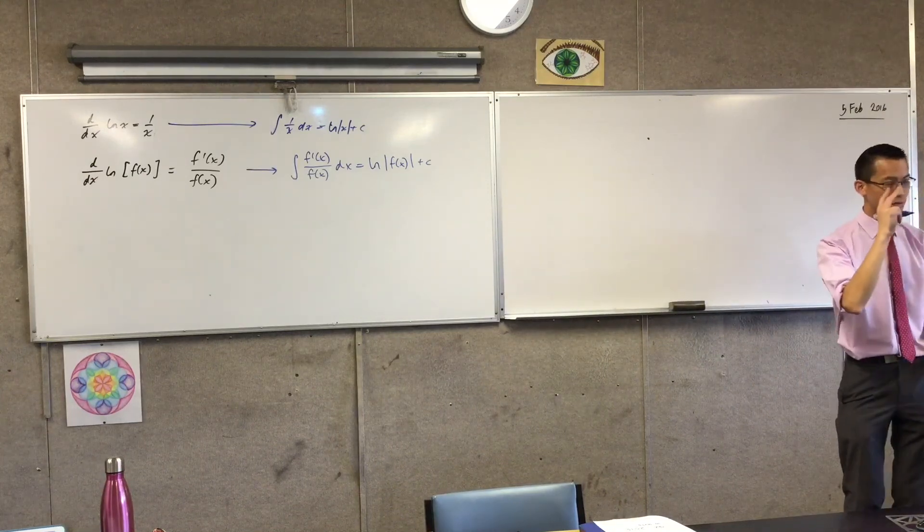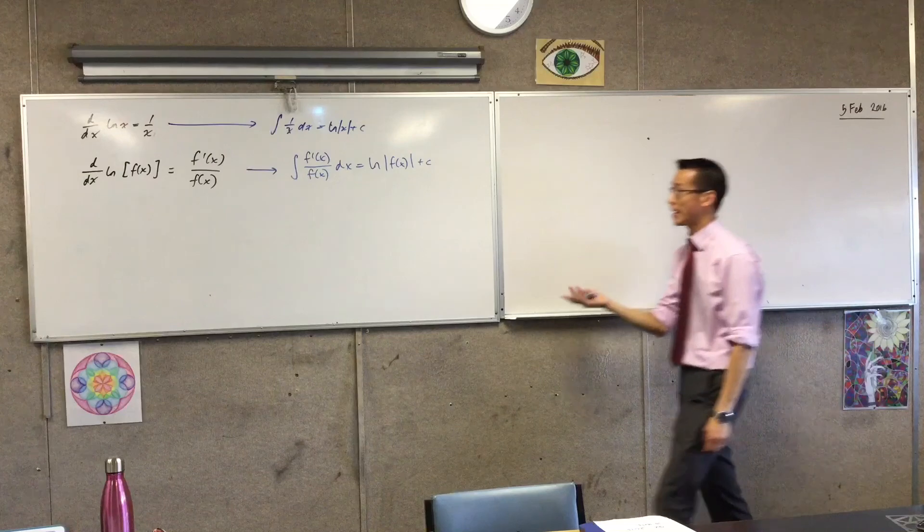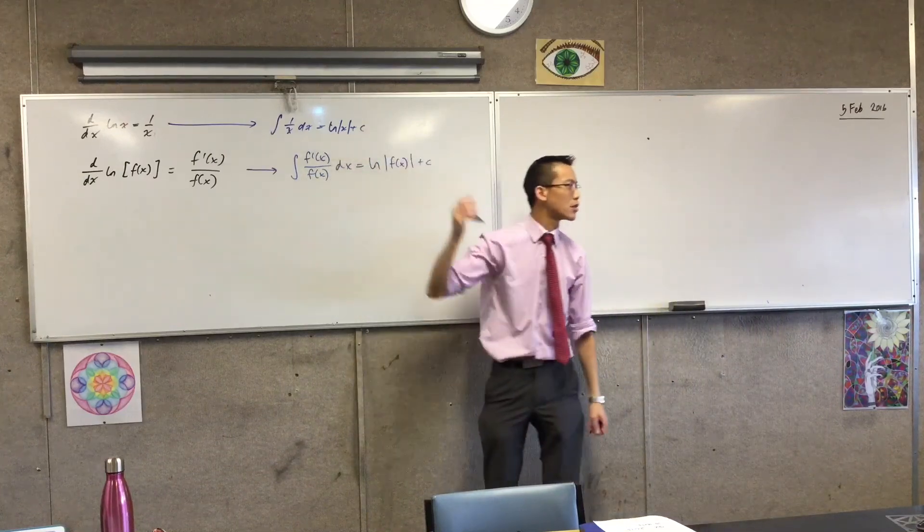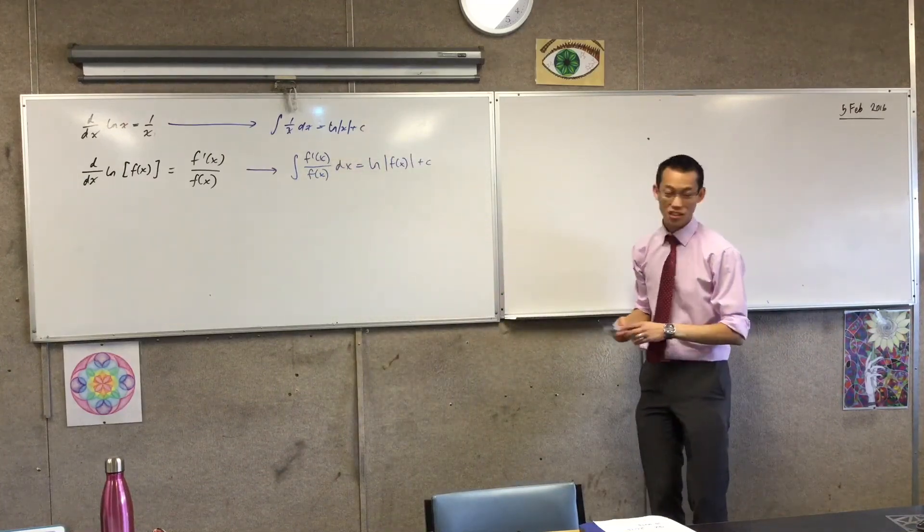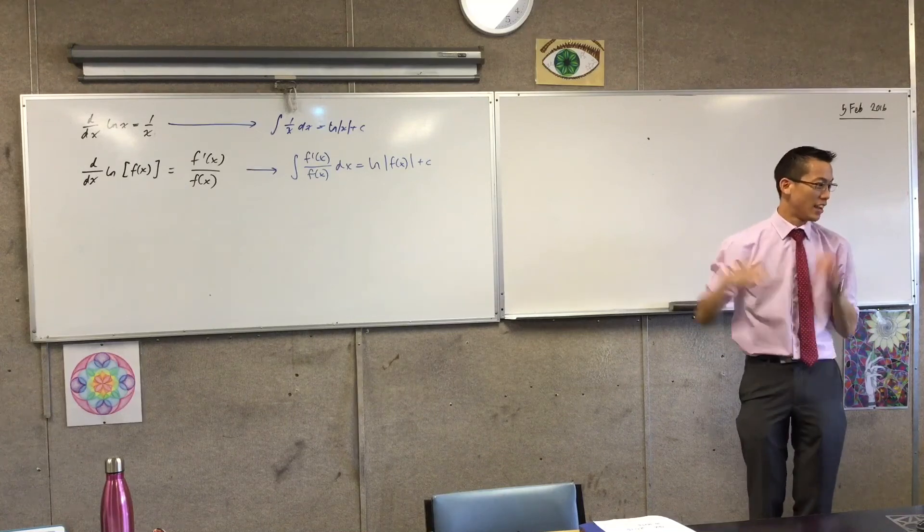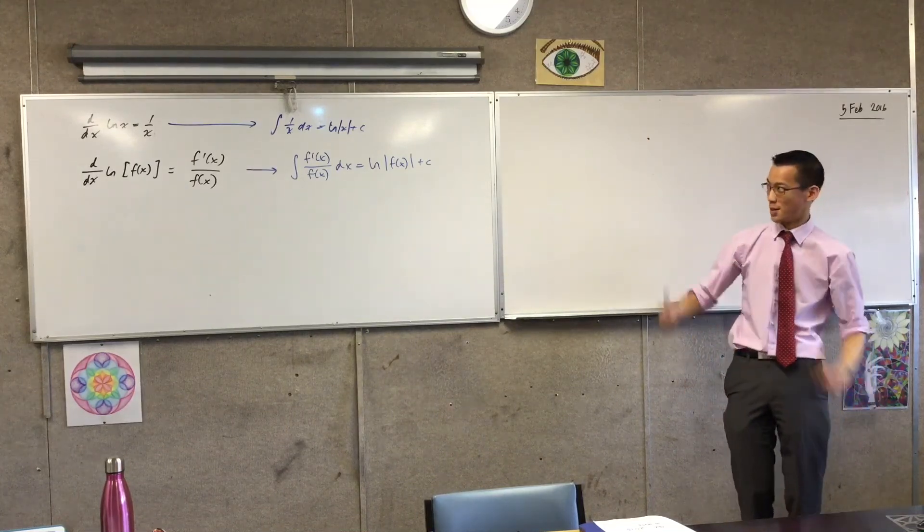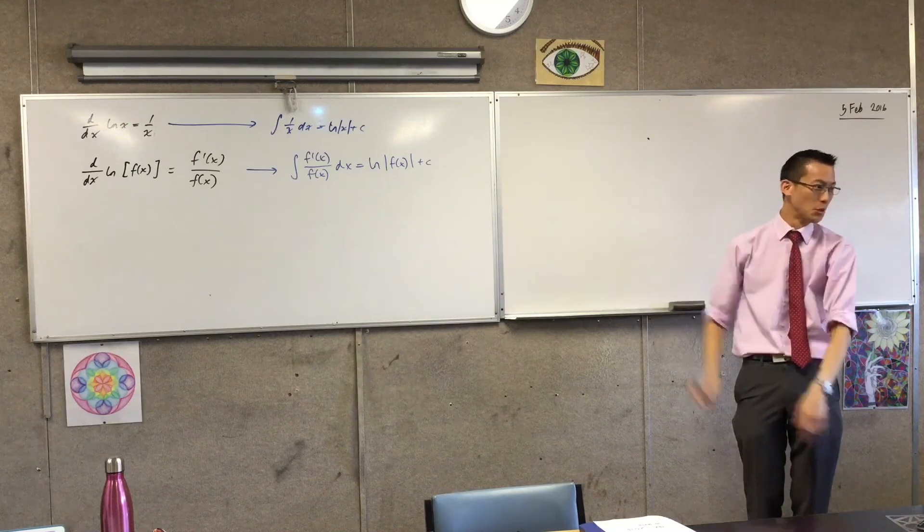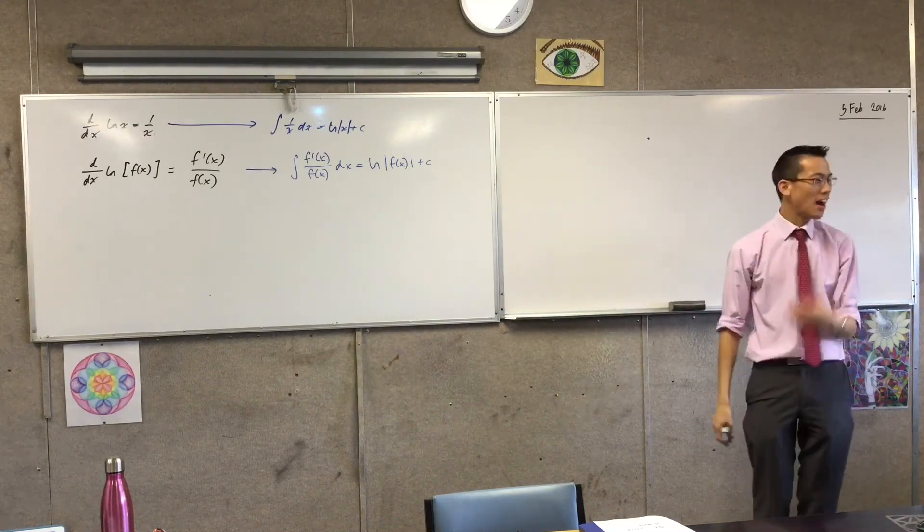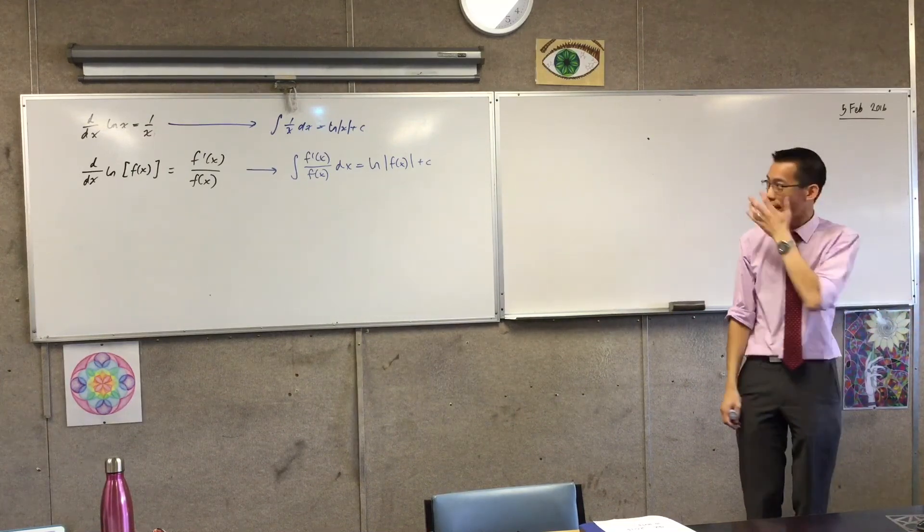Now there are two or three ways you can explain why do these absolute values appear. The first way is actually not an explanation at all, it's just to say because you have to - it's magic, because math. That's just the rule, just deal with it. That's not an explanation, clearly.